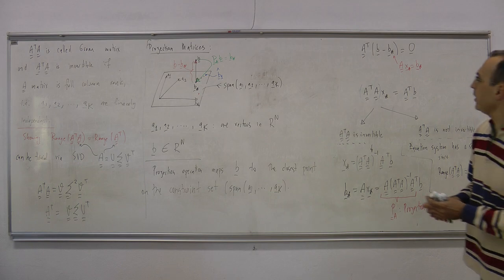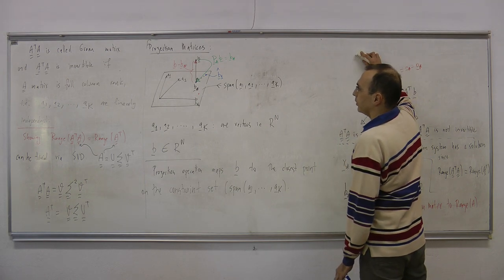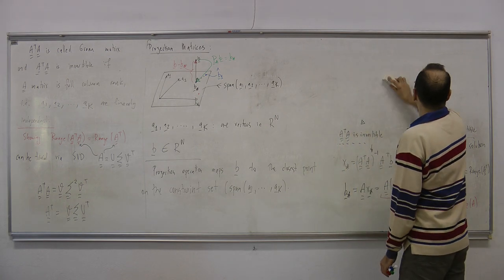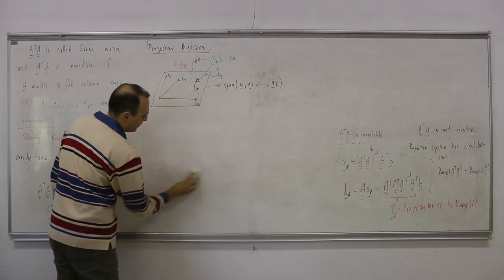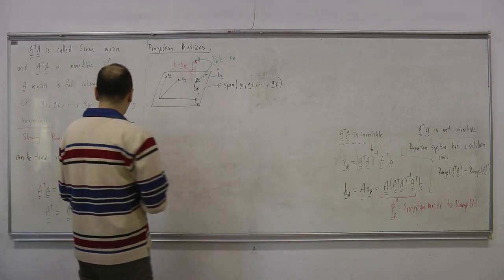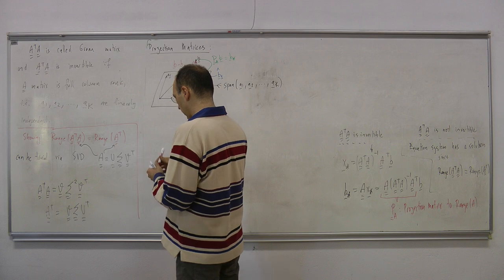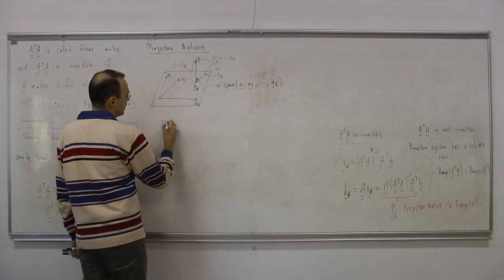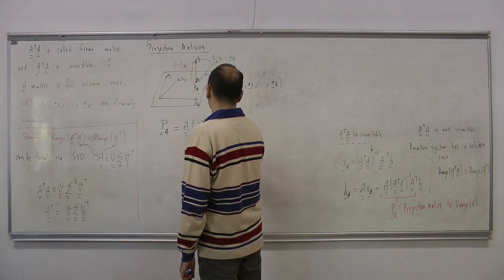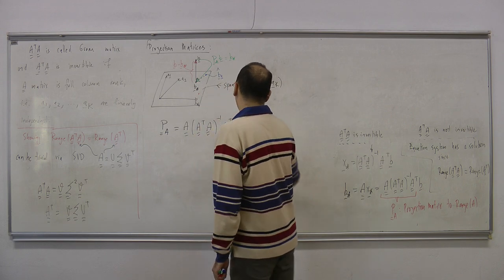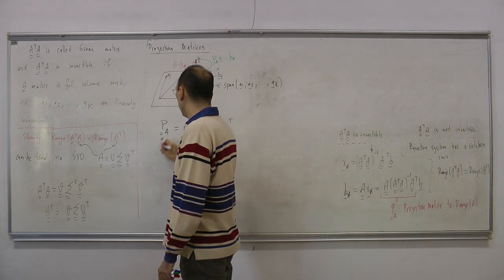We are done with projection matrices, but I would like to say something a little more. Let me erase some parts but keep the definition. So Pa equals A times (A transpose A) inverse times A transpose — this is our projection matrix one more time.